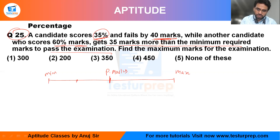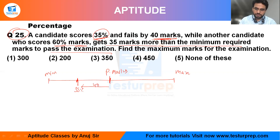So 35 percent is just less than passing — it is P minus 40. After that, 60 percent is over here, and it is just 35 marks more than the passing marks.